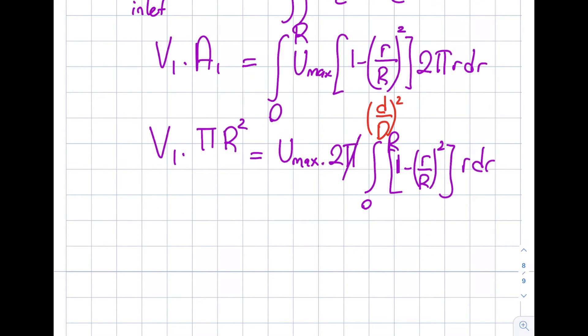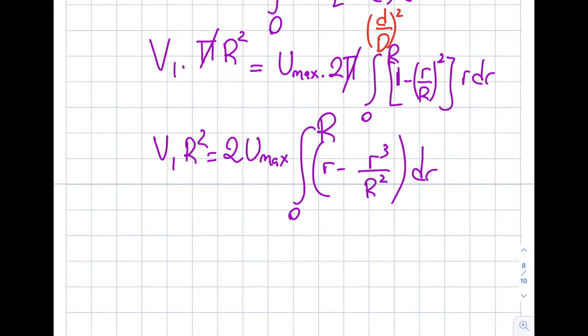It's going to be from 0 to capital R. So then this will be 1 minus R divided by capital R square times r dr. So let's try to make it a little bit easier on me. So it's going to be V1 R square equals 2 U_max. So then let's clearly demonstrate this 0 to capital R. So if I multiply by R, it's going to be R minus R cubed divided by R square dr.